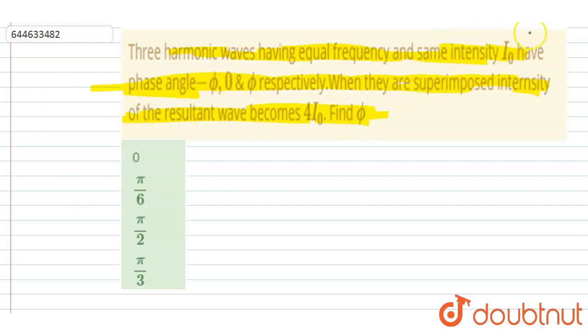So let's say initially the amplitude of the three waves was A₀, okay? And we know that the intensity is proportional to amplitude whole square. So if the resultant intensity is 4I₀, then the resultant amplitude will be 2A₀.